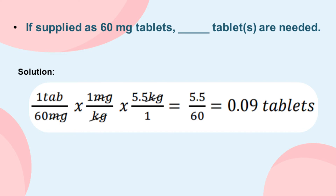Third example. If supplied as 32-milligram tablets, how many tablets are needed? Still, we use our given formula. Always identify the given: the weight, the dose, and the milligrams of tablets supplied. Substitute the given into the formula, cancel out terms, multiply, and divide. The answer is 0.09 tablets needed.